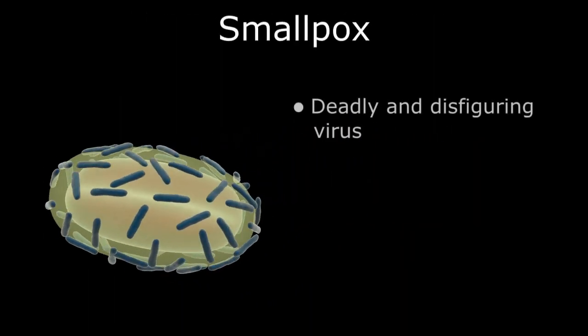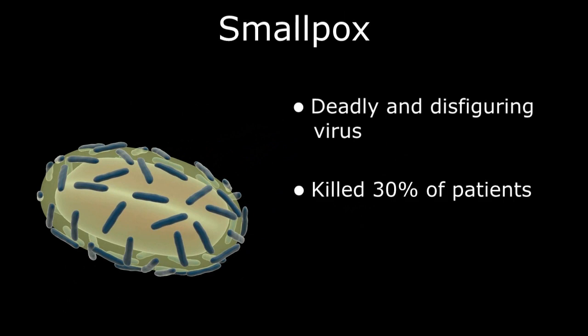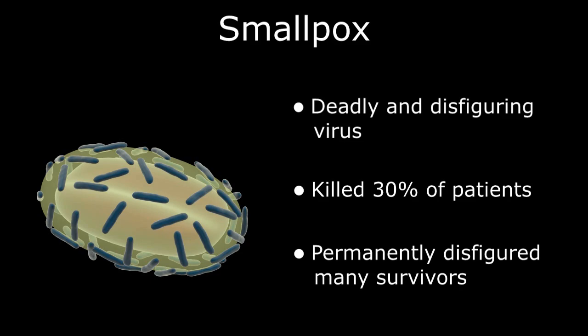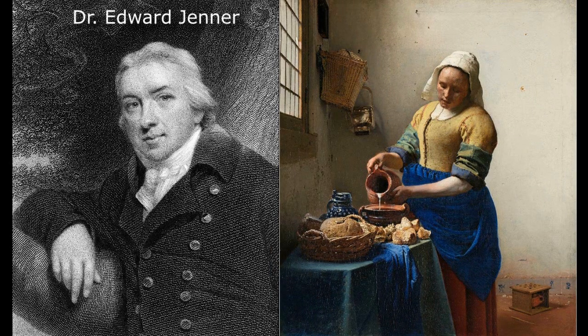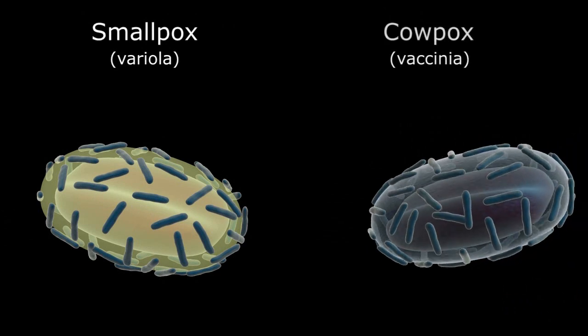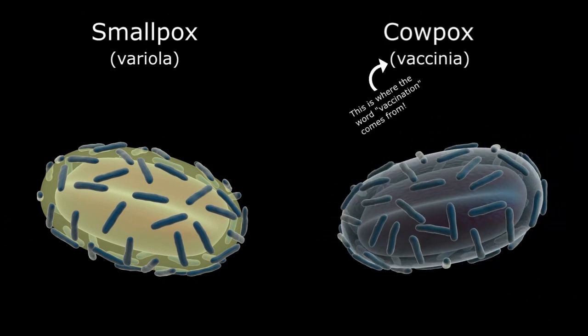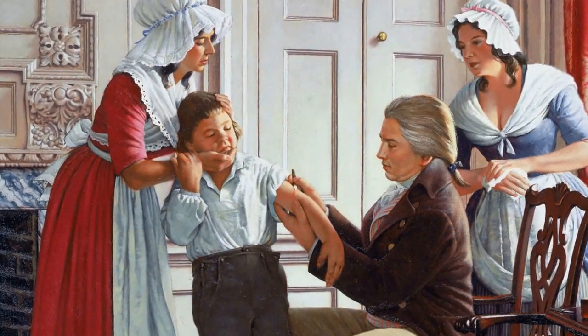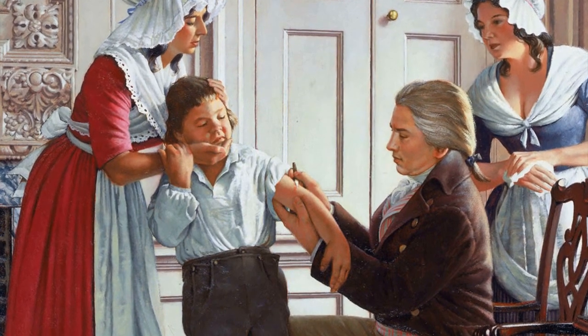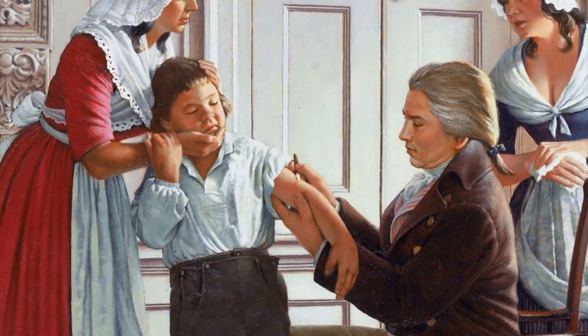Smallpox was a deadly and disfiguring virus, killing 30 percent of infected patients and permanently scarring many survivors. In 1796, British physician Edward Jenner noticed that milkmaids who previously developed the less serious cowpox wouldn't catch smallpox. The cowpox virus has similar surface proteins to smallpox for immunity training, but is much less virulent in the human host. Utilizing his observations in the milkmaids, Dr. Jenner performed the first vaccination on the 12-year-old son of his gardener in 1798.